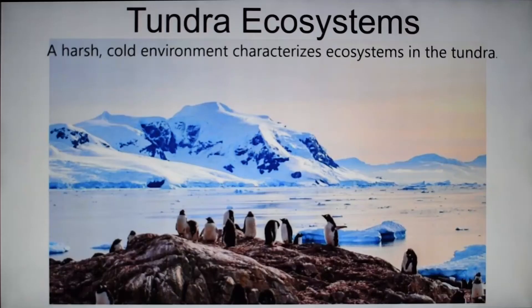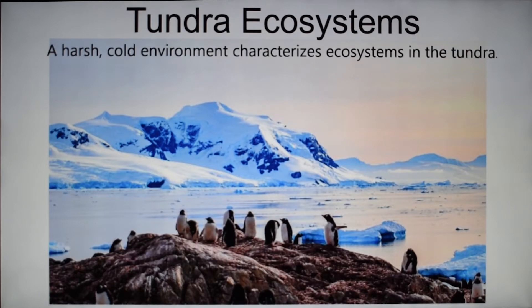The next type of ecosystem is the tundra. The tundra is cold and harsh, and these are typically the polar regions of our Earth. There's often glaciers and very little vegetation because it is so cold, and very little dirt, so things can't grow very easily. But there are animals that can survive there: cute little penguins like in this picture, polar bears, walruses, and snowshoe hares — different types of animals do thrive in these environments.